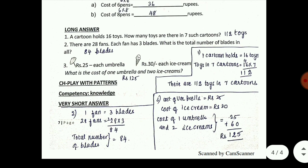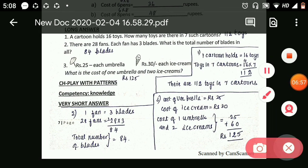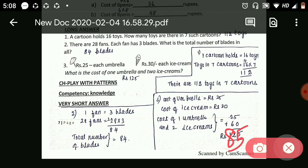Second one: 1 fan equals 3 blades, so 28 fans equals 28 into 3 equals 84. Total number of blades is 84. Cost of umbrella is rupees 25; cost of ice cream is rupees 30. So cost of one umbrella and two ice creams is 25 plus 60 equals 85. Cost of one umbrella and two ice creams is 85.